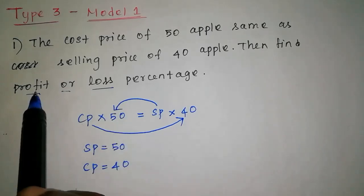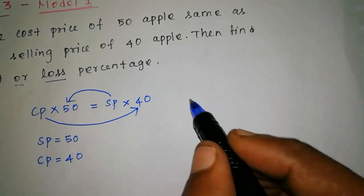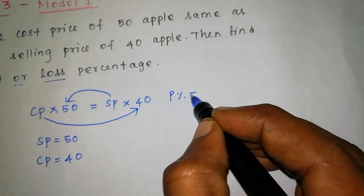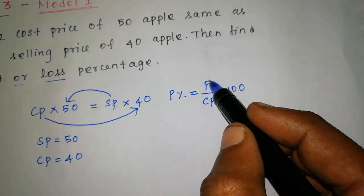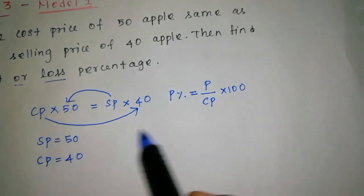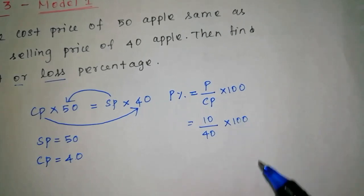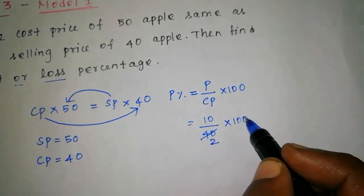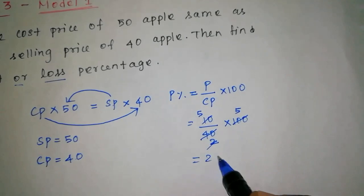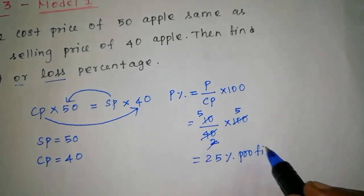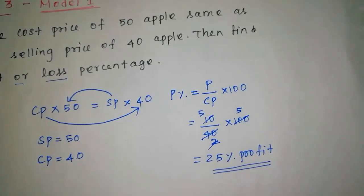What is profit? Profit percentage is equal to profit divided by cost price, into 100. Profit percentage equals selling price minus cost price, so that is 50 minus 40 equals 10, divided by cost price 40, into 100. If you cancel, the profit percentage is equal to 25%.